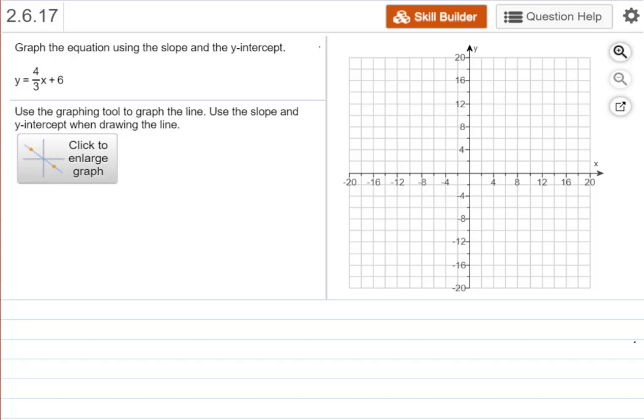Hi, this is your teacher Barbara Rademacher and we're going to graph a line using the slope and the y-intercept. If you recall, this is slope-intercept form y equals mx plus b, where m, the slope, is 4 thirds and b, the y-intercept, is 6 on the y-axis.